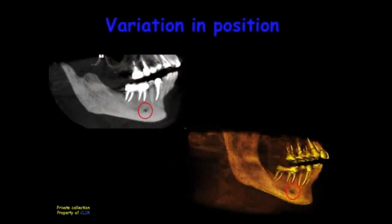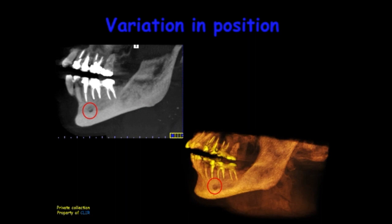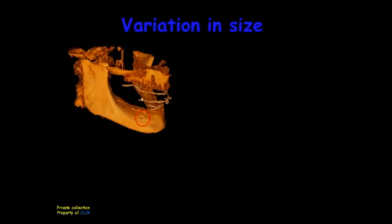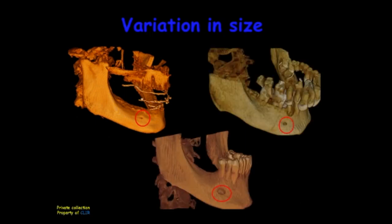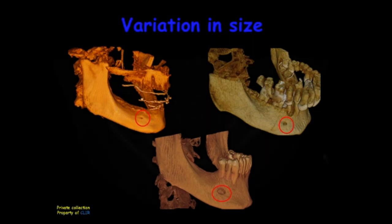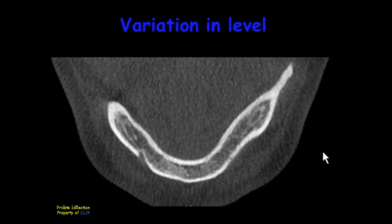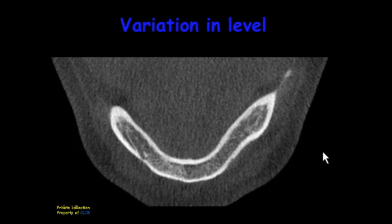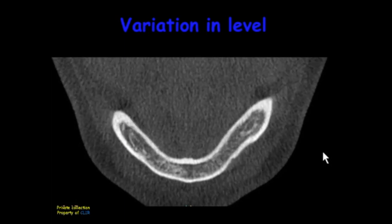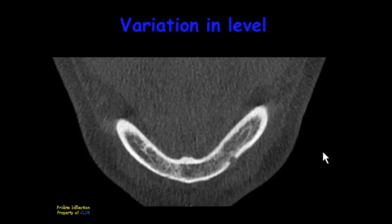Sometimes we can have a variation in the positioning of the mental foramen, like in this case, where you can see that the position is between the second premolar and the first molar, on the right and on the left side. We can also have different sizes, going from a small opening to a larger one. We can also have a variation in the level of the mental foramen on the right side and on the left side, as you can see on these axial cuts — the two foramina are not on the same level.